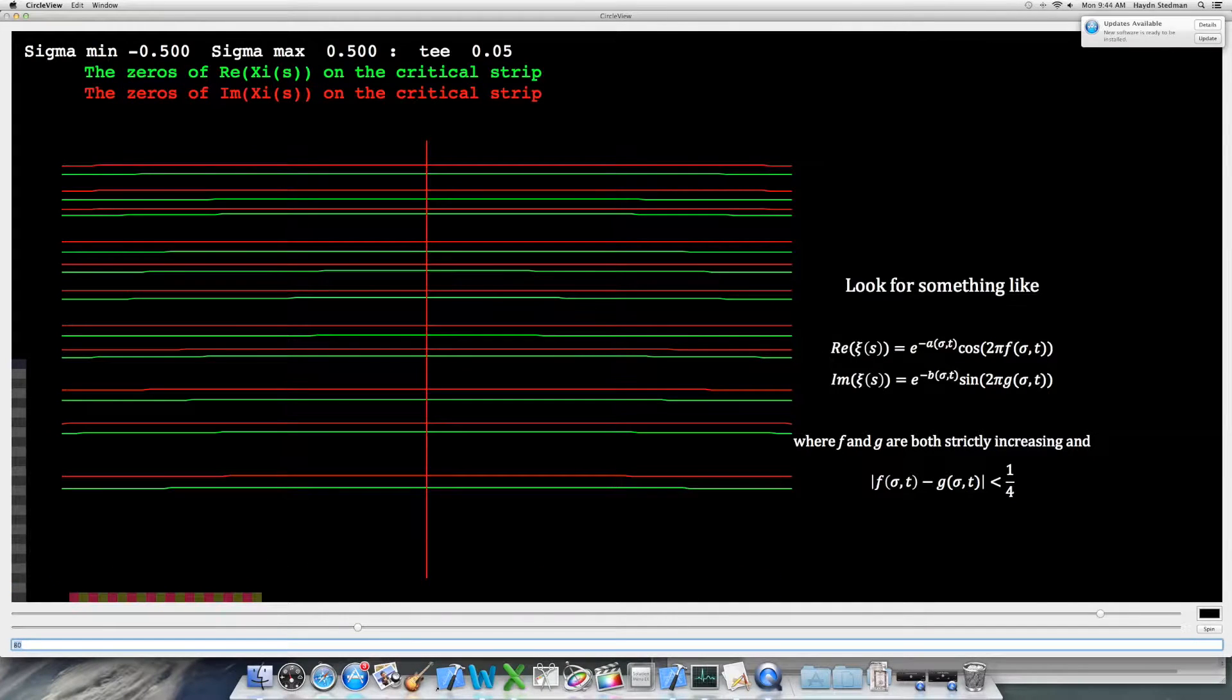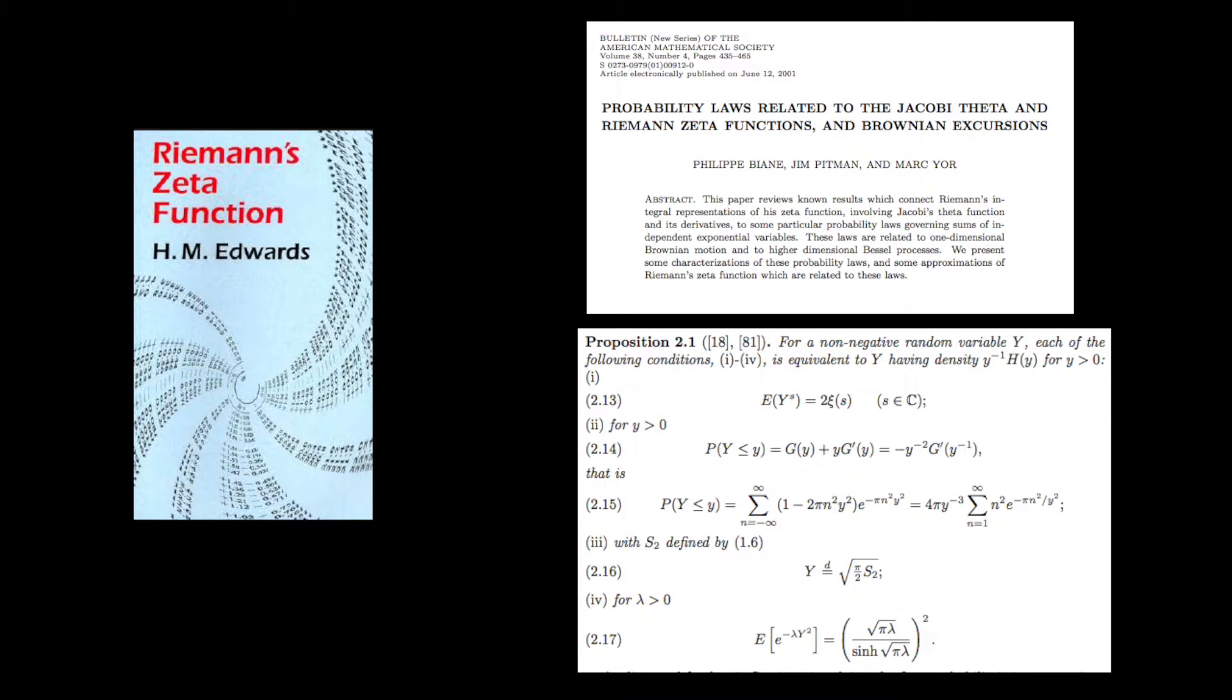Here are the real and imaginary zeros on the critical strip. They definitely look like two interlaced or coordinated waves. To find such a periodic expression we use the results in chapter 10 of Edwards and the paper of Bain, Pittman and Yore.